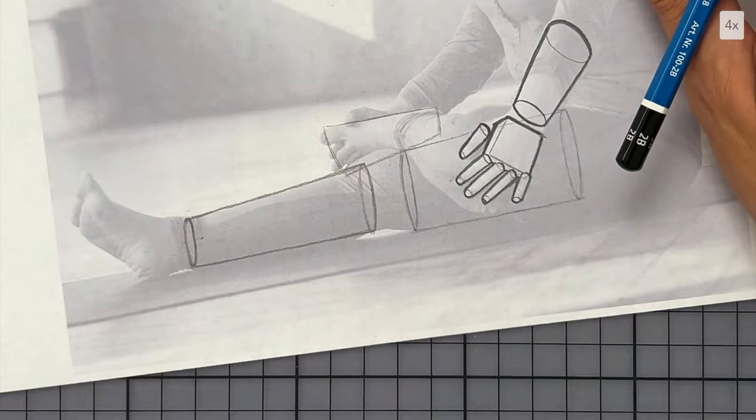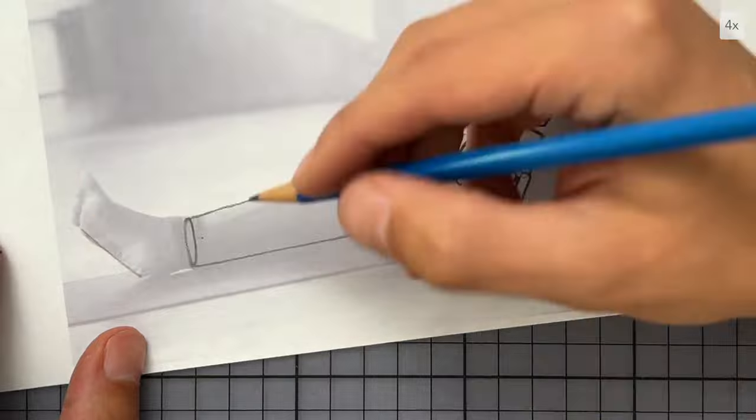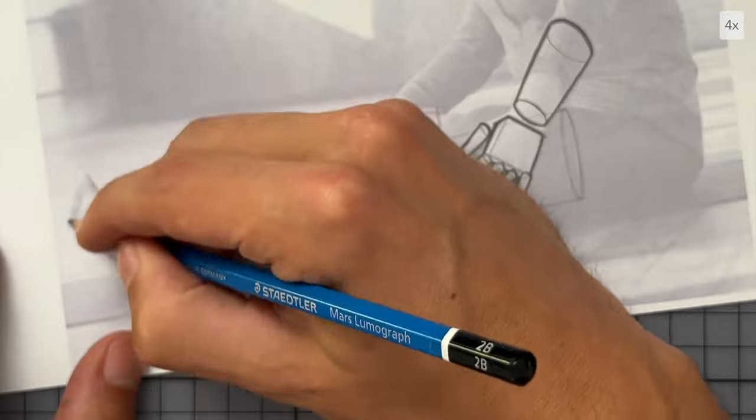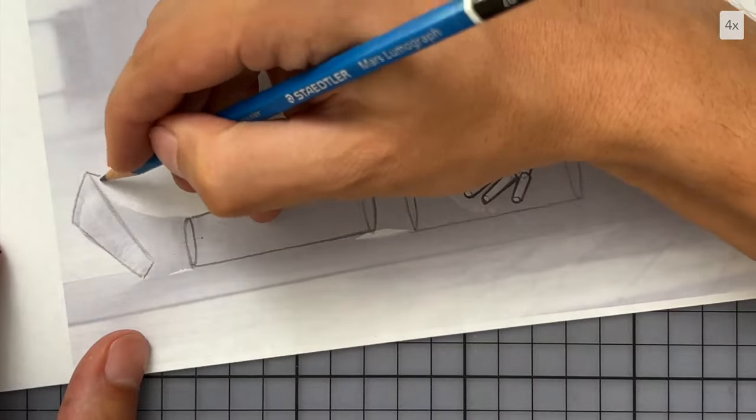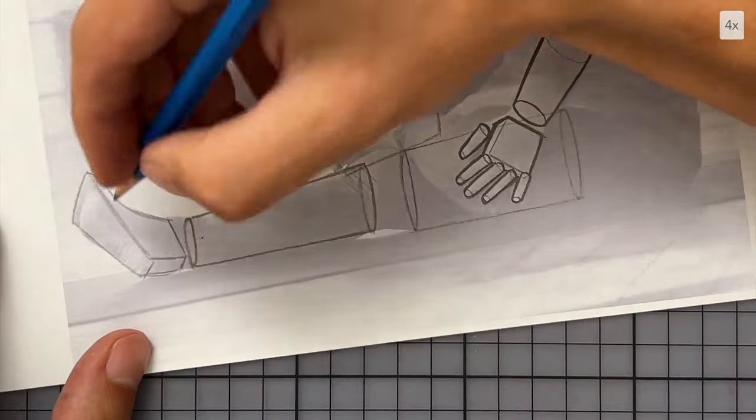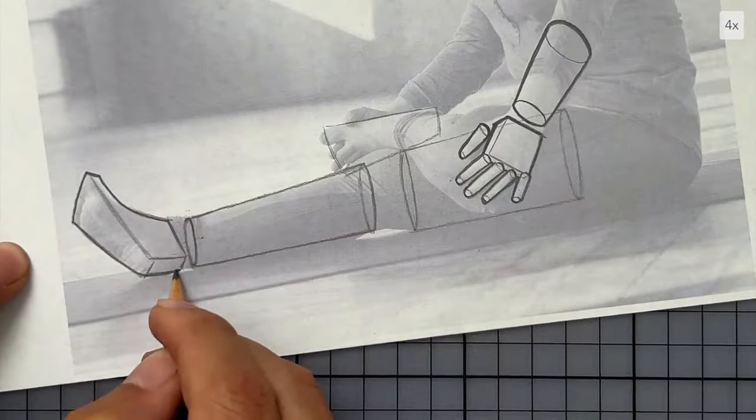Now I draw the other foot and I start with one plane for the sole of the foot, and then I add thickness to it. As before, the outlines are thicker, heavier and darker than the internal lines.